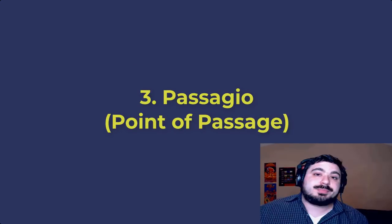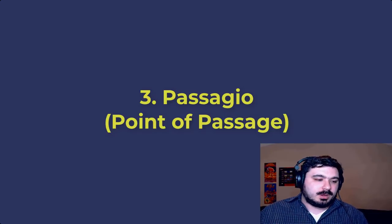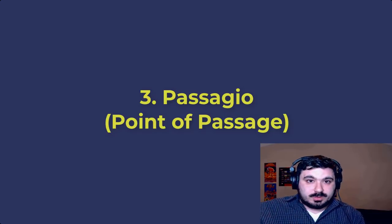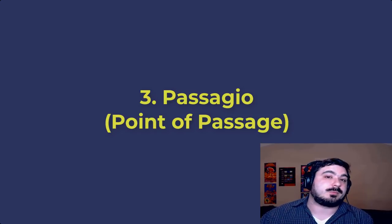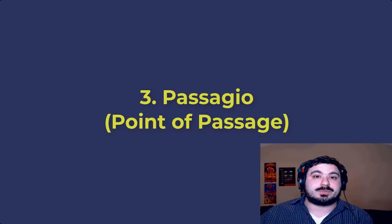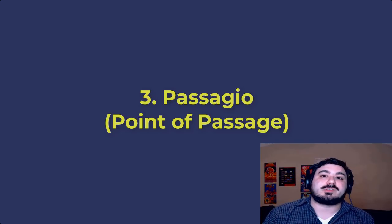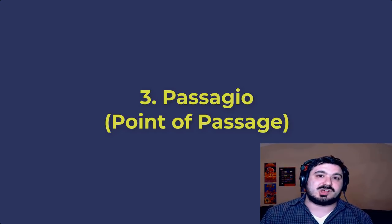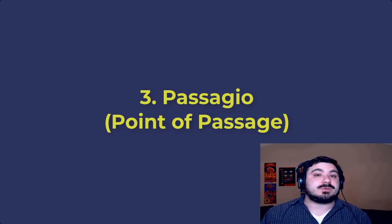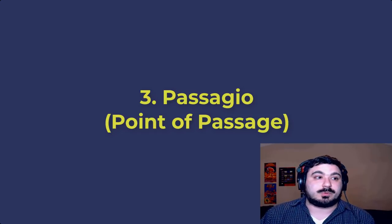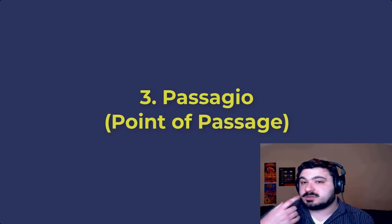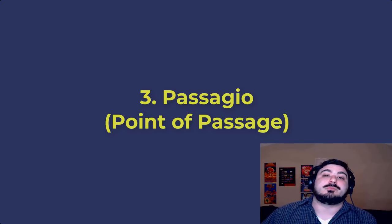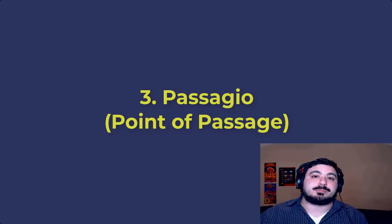Next up is the term passaggio. The passaggio, or the point of passage, is the place in the voice where one register wants to move into the next. That does not mean you have to follow the passaggio — you often hear people sing in chest voice far beyond their passaggio. But the passaggio is the point at which the voice has to make the greatest adjustment to either stay in the same register or move into the next one. My passaggio as a baritone is somewhere around an E-flat 4.